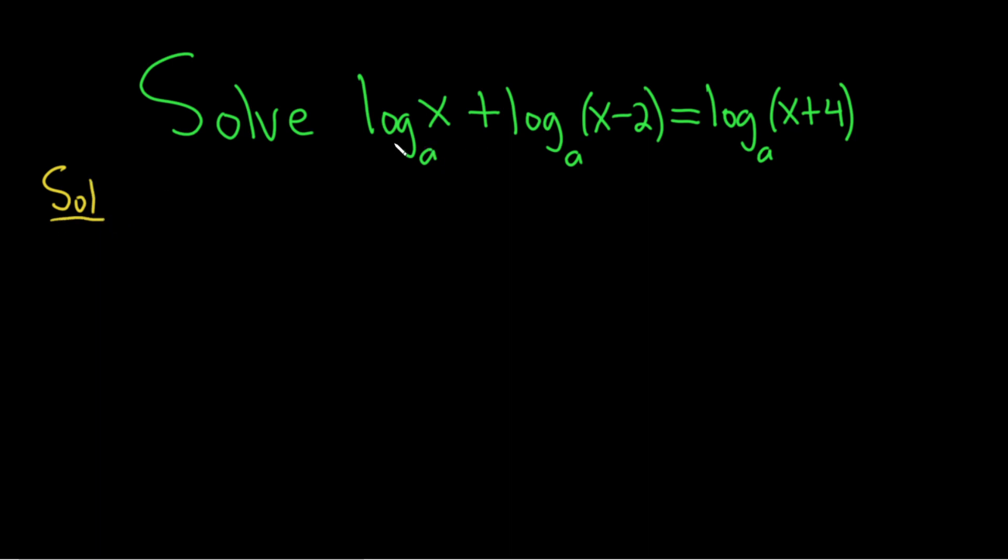In this problem we have three logarithms, so the natural thing to do is to try to combine them. On the right hand side we have a single log, and over here we have two logs. We can easily combine these using something called the product rule. The product rule says if you have the log of u plus the log of v, this equals the log of the product, u times v.